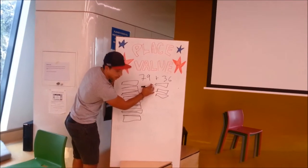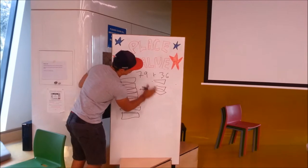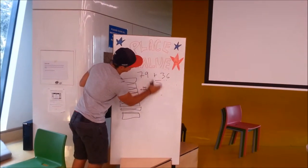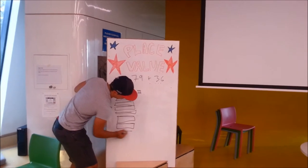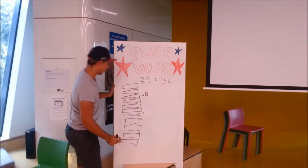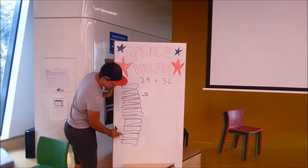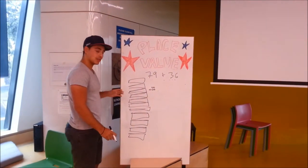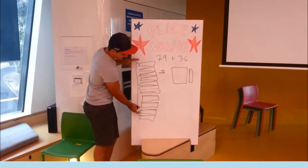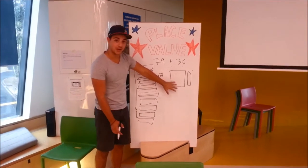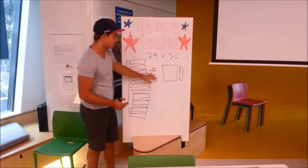We've also got the 30 left over, so now we're bringing the 30 in. That gives us 1, 2, 3, 4, 5, 6, 7, 8, 9, 10, 11 tens. So that's 11 tens and 5 units. You can see these 10 tens here are now formulated into 100, because 10 tens equals 100. We've got one 10 left over and 5 units, giving us a value of 115.